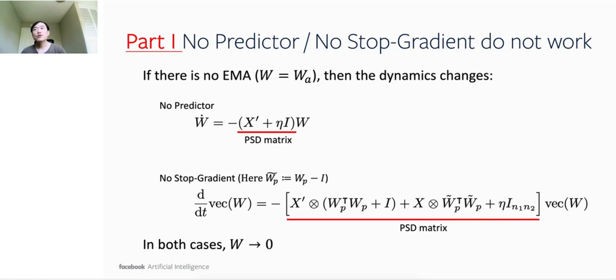First, we show that without a predictor or stop gradient, non-contrastive self-supervised learning would collapse. These two components have been shown to be critical by many empirical studies for non-contrastive SSL, but it is not clear why it is the case in principle. From simple algebraic manipulation, we could show that in both situations, the dynamics changes, and the network weights W will go to zero and vanish, which means that it will not learn anything.